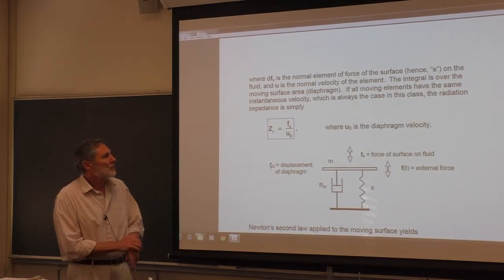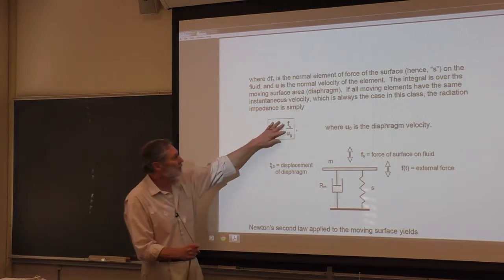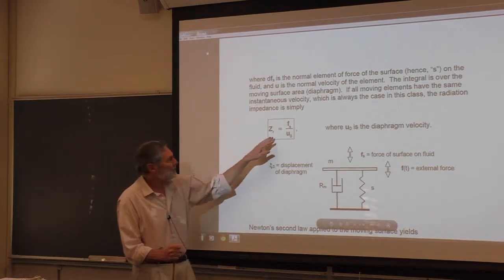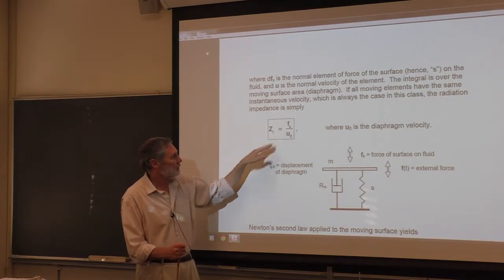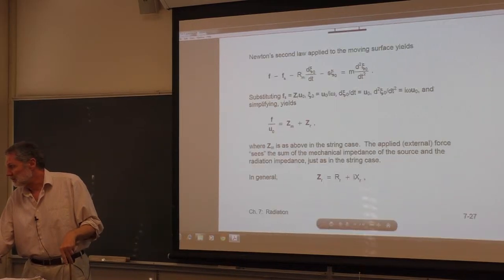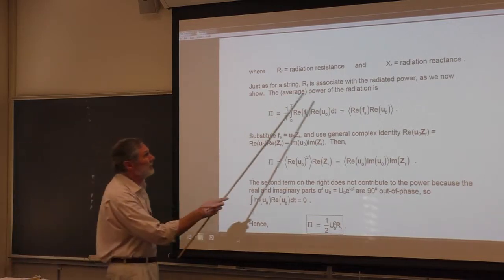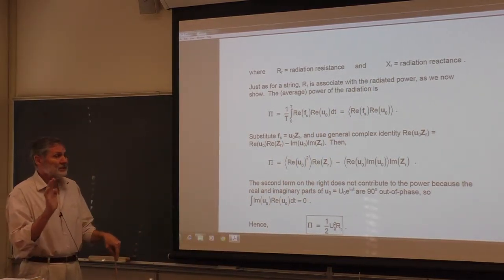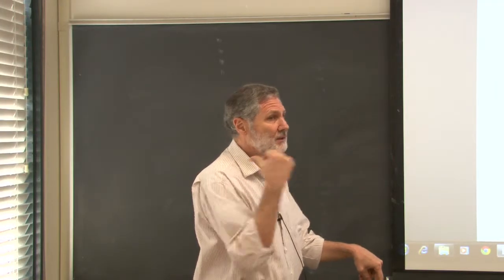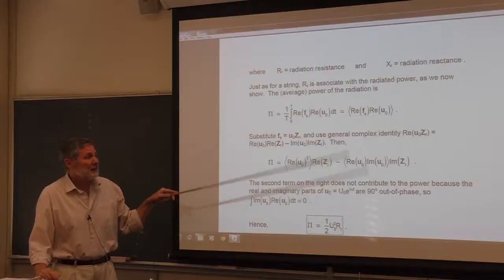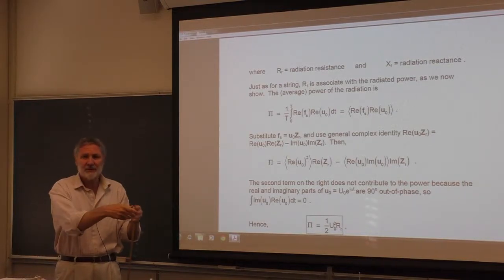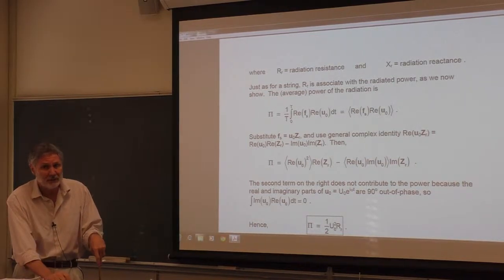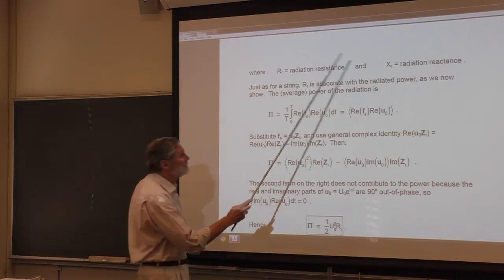These quantities are complex — there can be a phase difference, which is very important. The real part of the radiation impedance dictates the acoustic radiated power, and it is called the radiation resistance. The imaginary part is called the radiation reactance. The radiation resistance is associated with energy being radiated away, while the reactance corresponds to energy that shuttles back and forth between the driver and the local field with no net loss.